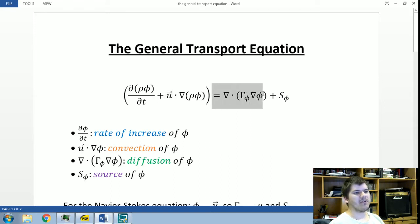And here we have our diffusion term, which has a constant of proportionality, which is given by gamma. And we have a source term of this quantity phi.